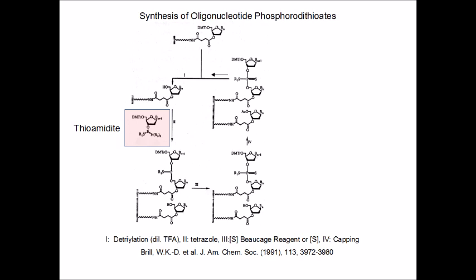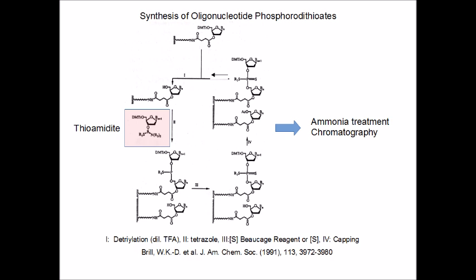Very often Beaucage reagent is used for this purpose, but also elemental sulfur in appropriate solvents has been employed successfully. Reactions that had not been completed are then capped upon acetylation, which prevents an accumulation of failure sequences in the final product. After the coupling cycle is completed, we have an oligonucleotide chain bound to the polymeric support bearing a 5'-dimethoxytrityl group, and the next synthesis cycle may now commence upon detritylation.